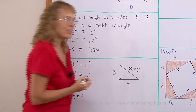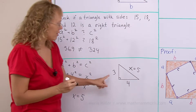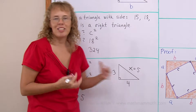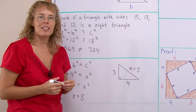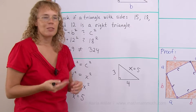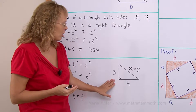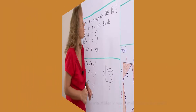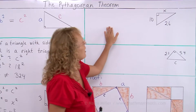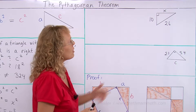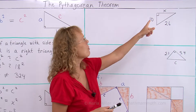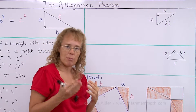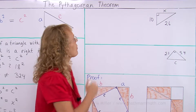Notice how easy these numbers are: 3, 4, 5. It's a very special triangle that people use a lot, for example in construction. Here is another triangle to solve. This time the unknown side is not the hypotenuse, but the theorem still works.